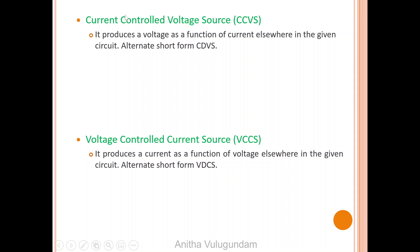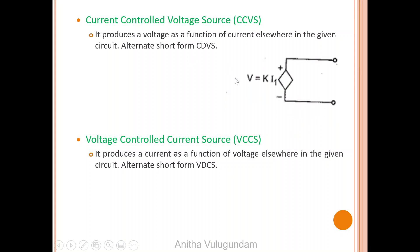Third one: current controlled voltage source. It produces a current as a function of current elsewhere in the given circuit. Alternate short form is CDVS — current dependent voltage source.